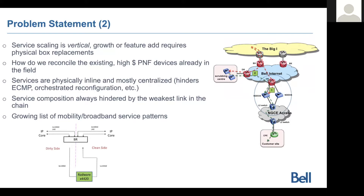We have a tendency right now to deploy all those services physically inline — they are not part of the networking topology, they're just connected as bump-in-the-wire. So they get in the way of how we are building our networks. Equal cost paths, Clos fabrics — how do we do orchestrated reconfiguration of those functions? These constraints are creating complexity as we try to grow or add new services more dynamically.